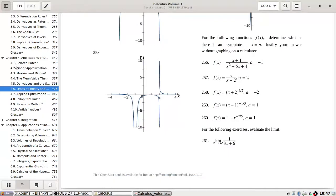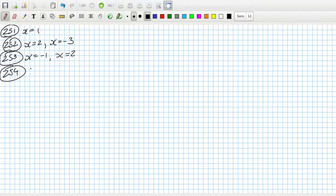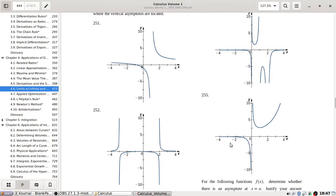254: I think there's one at zero, one, and two. Zero, one, and two. 255 is just at zero.